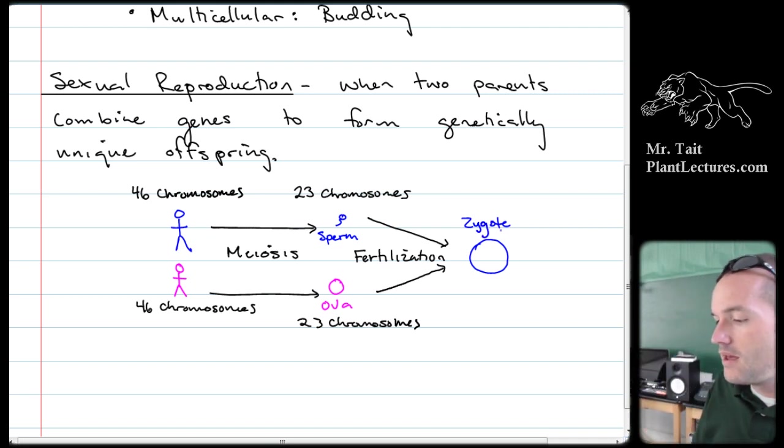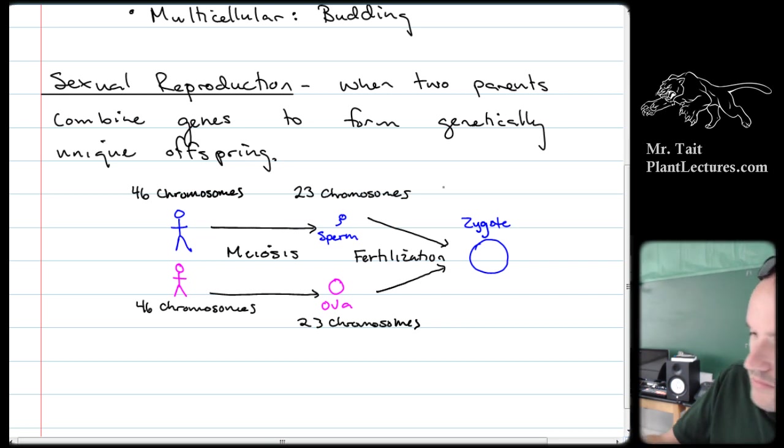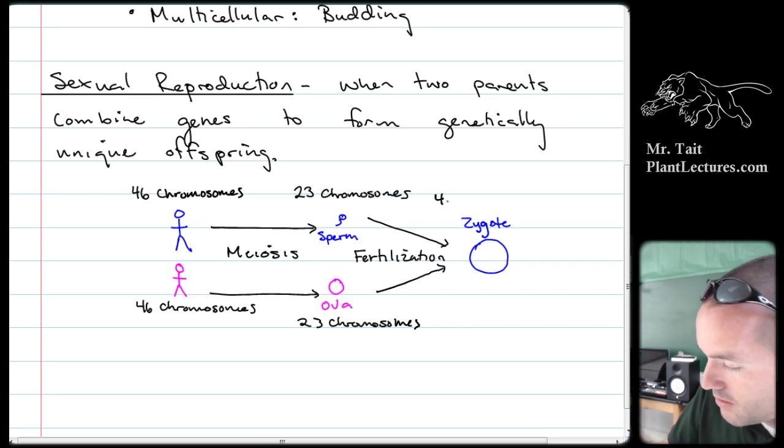How many chromosomes does a zygote have? 46 — 23 plus 23.